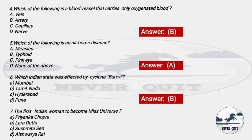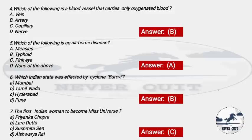Question 7: Who was the first Indian woman to become Miss Universe? Options: A) Priyanka Chopra, B) Lara Dutta, C) Sushmita Sen, D) Aishwarya Rai. The right answer is option C — Sushmita Sen. Both Sushmita Sen and Lara Dutta have won the Miss Universe title, but Sushmita Sen was the first.